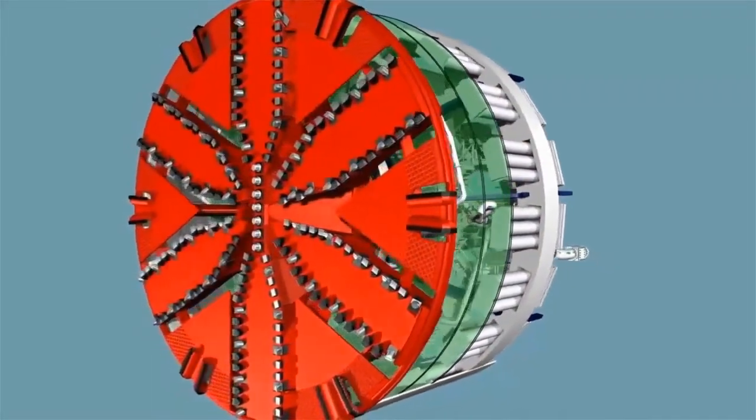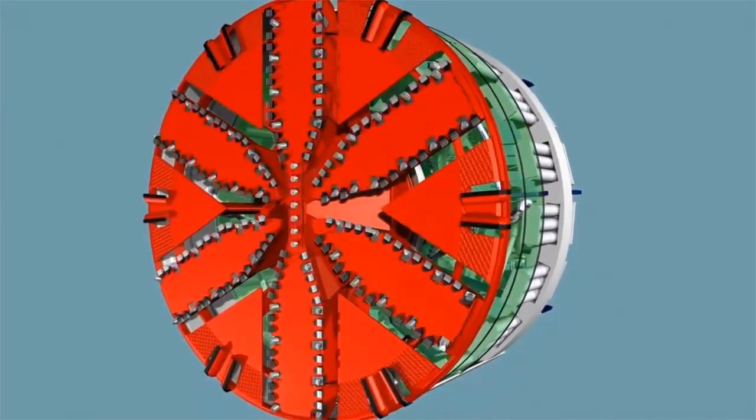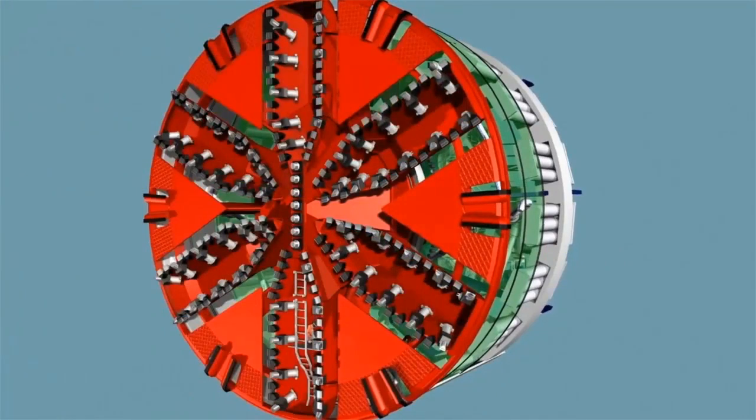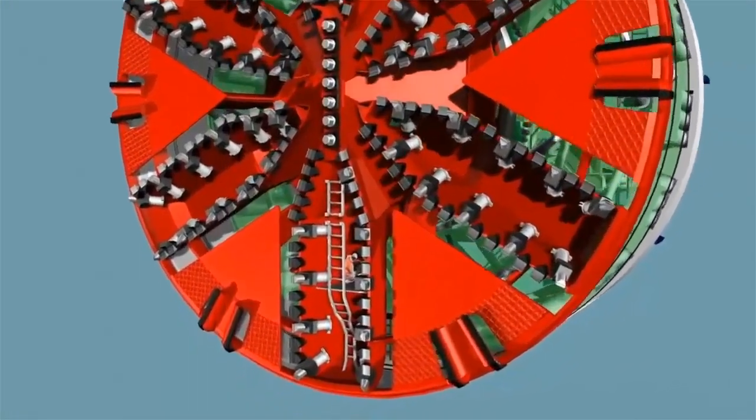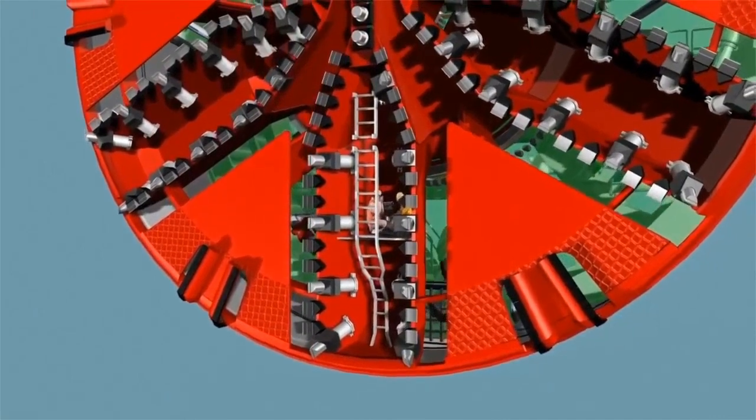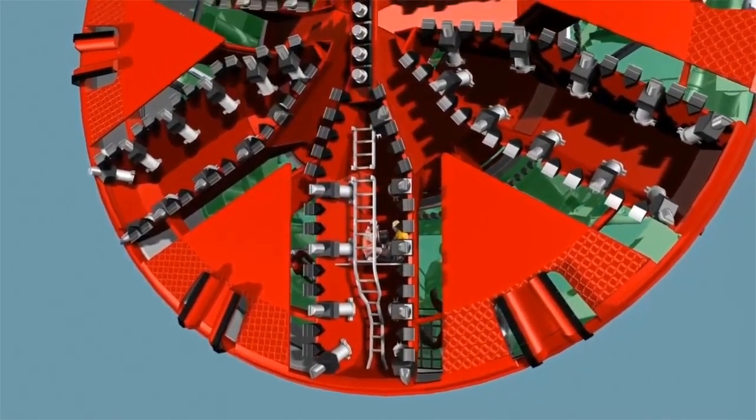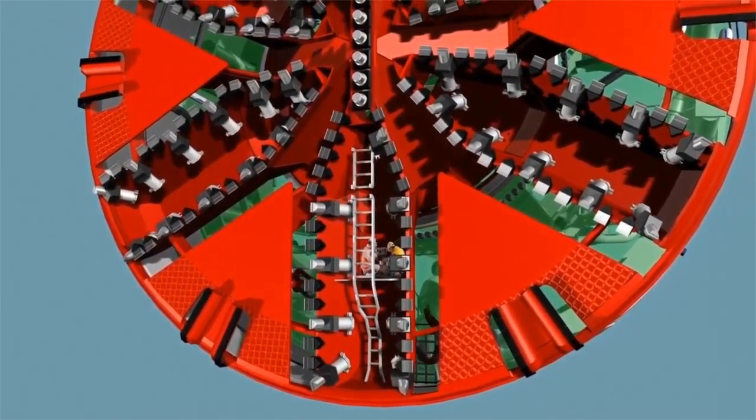The six main spokes of the cutting wheel are accessible under atmospheric conditions. For tools to be replaced, the cutting wheel is halted in the maintenance position. The accessible spokes allow the maintenance staff to reach the worn tools and replace them.